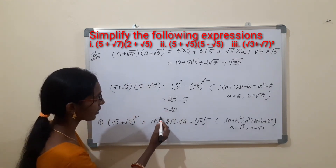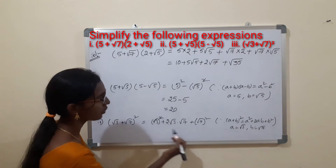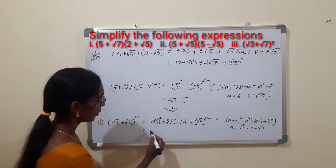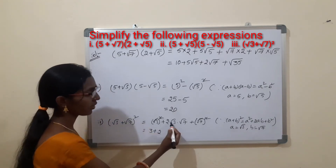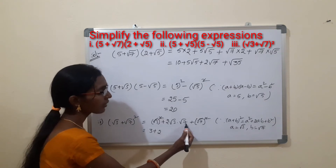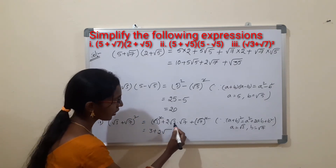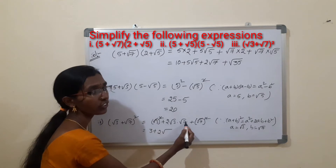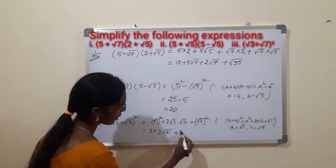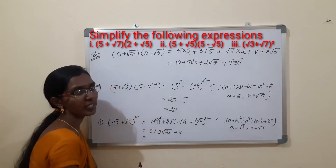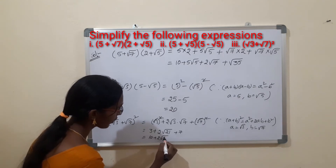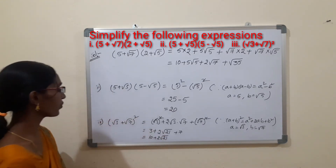The square and square root cancel for the first and last terms. We get 3 plus 2 times √(3×7). Since 3 × 7 = 21, the middle term is 2√21, plus 7. So 3 + 7 = 10, giving the answer 10 + 2√21.